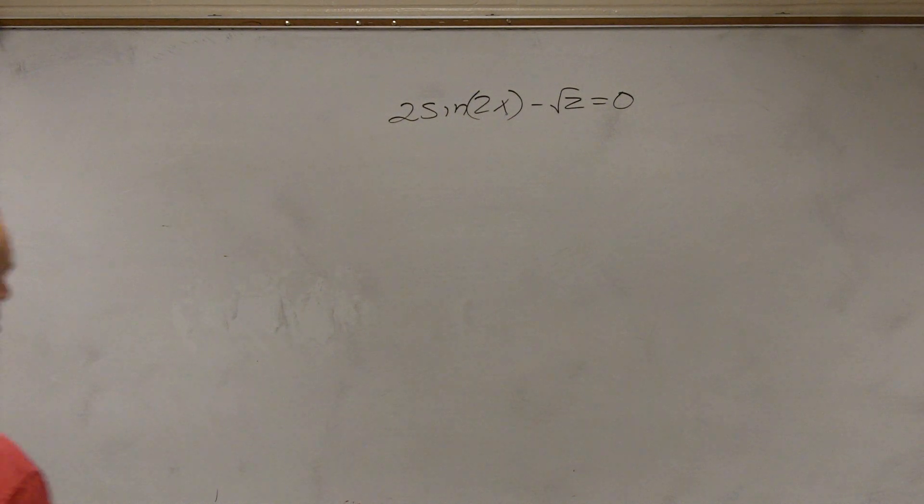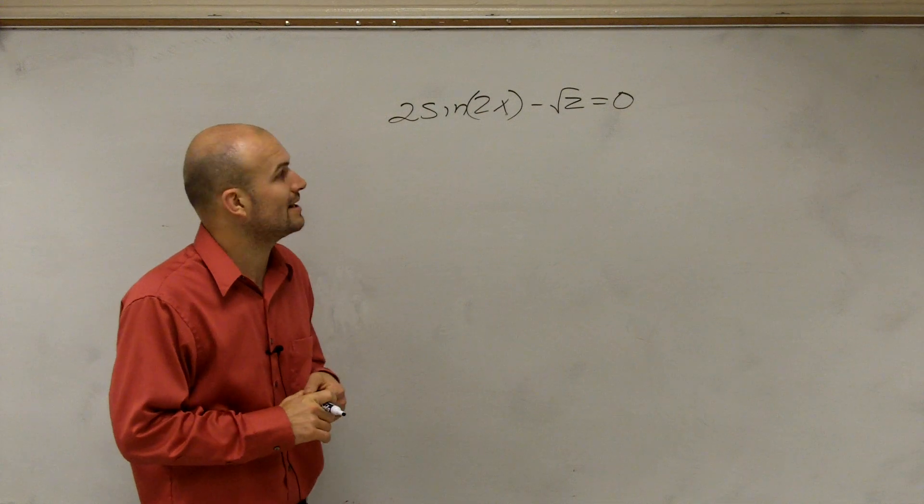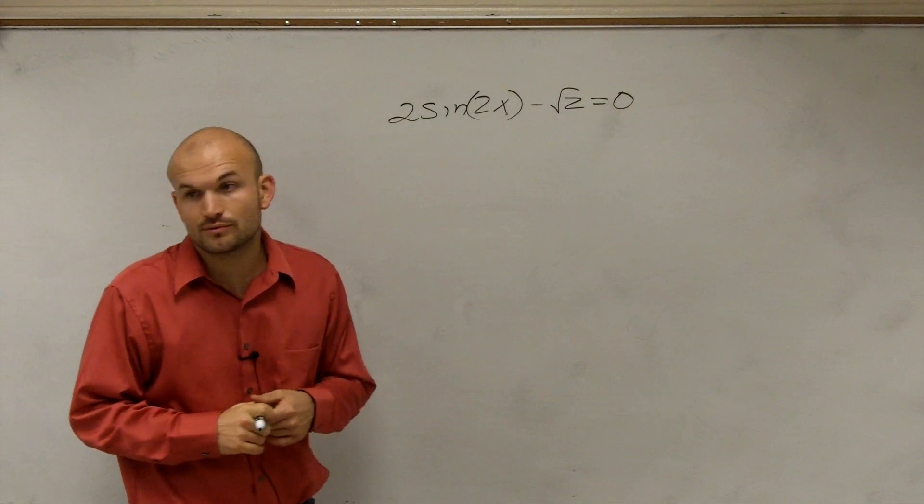All right. So to do this problem, what we now have is 2 sine of 2x minus the square root of 2 equals 0.